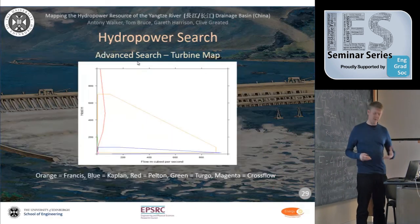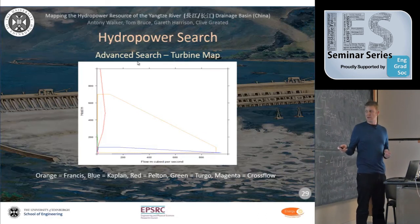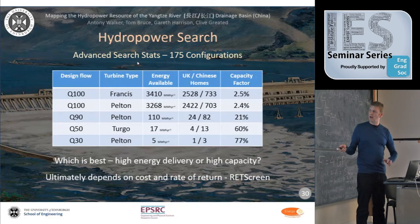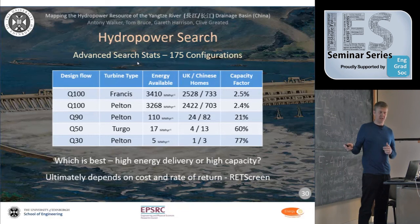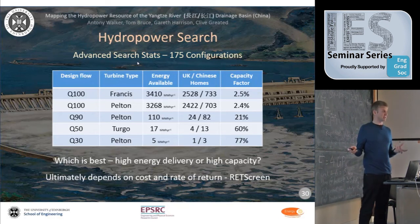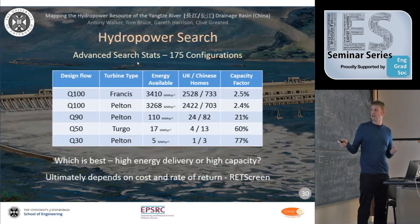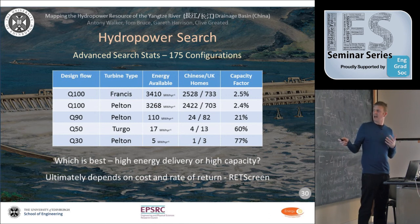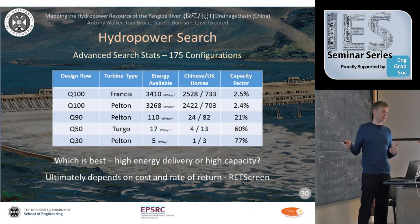The algorithm draws a turbine map and identifies appropriate turbines based on power and head — the height difference is critical for hydropower. For one particular site it found 175 different configurations. For example, high flows could use a Francis turbine, delivering considerable energy and powering up to 2,500 UK homes, but operating only about 2.5% of the time — so the question is whether that's cost-effective.